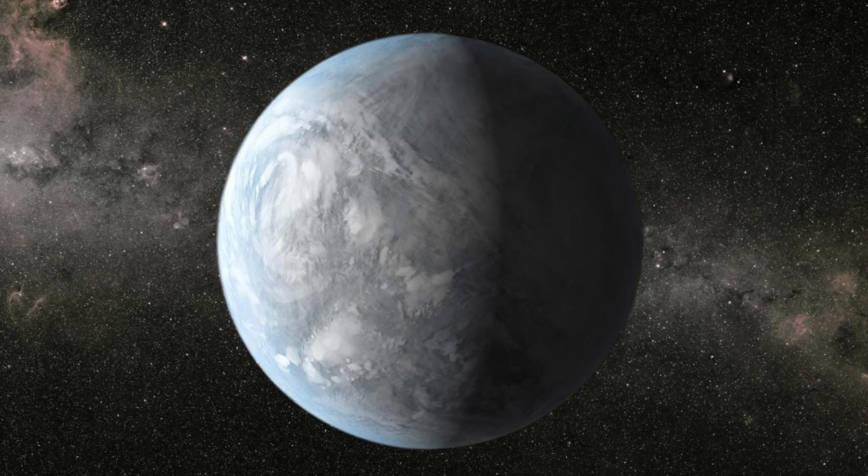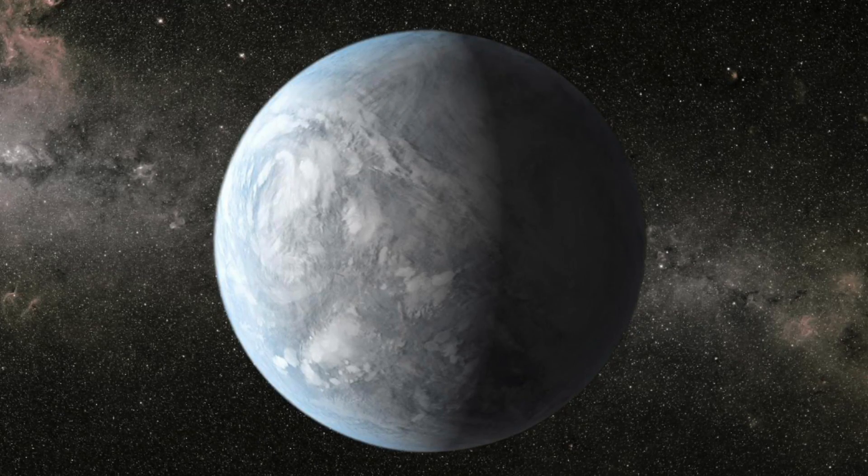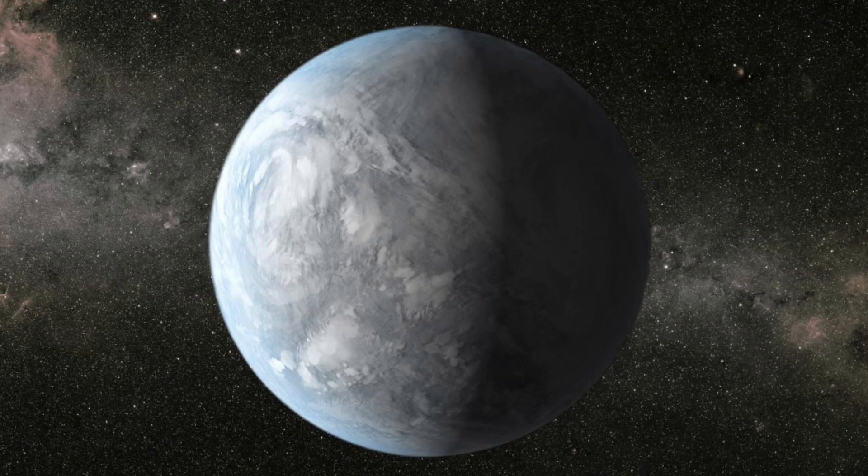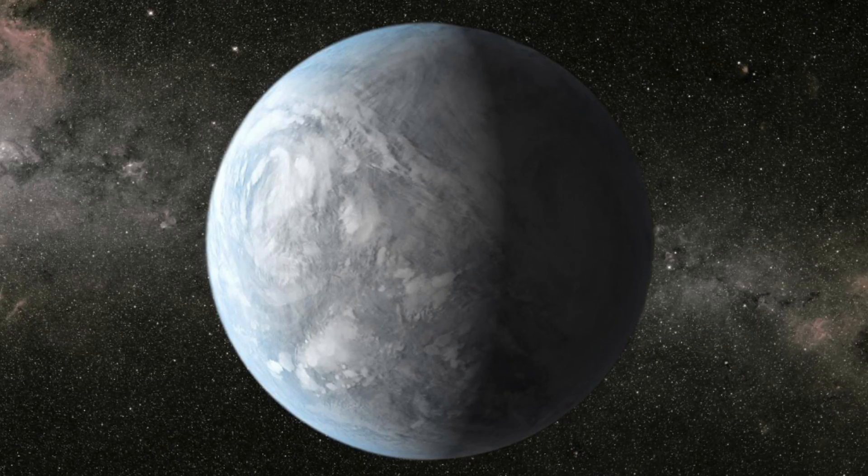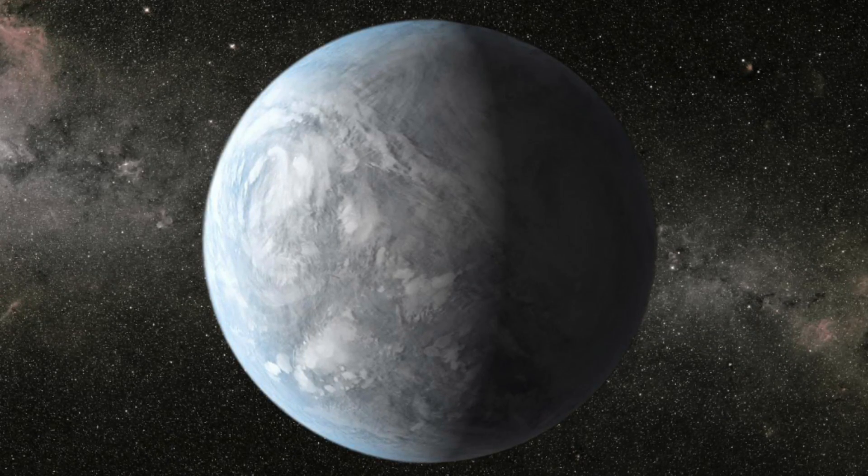So by measuring the albedo of an exoplanet, we can make a conjecture about what its surface or atmosphere is made out of. If we were to measure a high albedo, it's more likely to have a lot of cloud coverage or be covered in an ice sheet than it is to be just a totally rocky surface, which would have a low albedo.